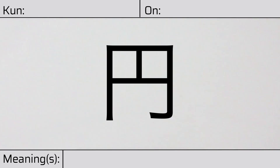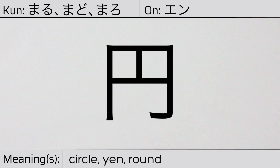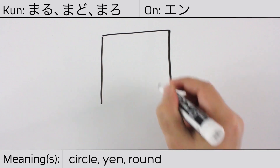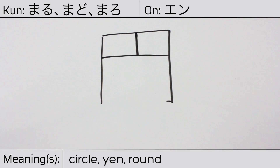Welcome to this lesson on Japanese kanji. Today, we'll be discussing this character. This kanji has kunyomi or Japanese readings of maru, mado, or maro, and it has onyomi or Chinese reading of en. This character has the meanings circle, yen, or round. Here is the stroke order.